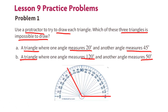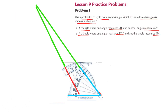Part b: a triangle where one angle measures 120 degrees and the other angle measures 50 degrees. This angle is 120 degrees and this angle is 50 degrees. Now we can slide them over and see if we can fit them together to form a triangle. The green lines represent where these two lines would eventually meet to form a triangle.